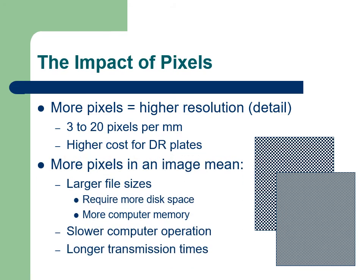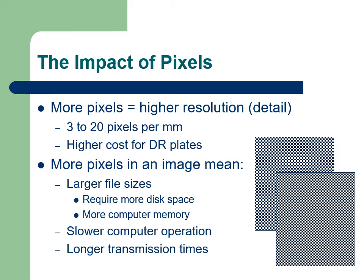The ultimate impact of more pixels means more data for the computer to process, leading to the need for larger storage devices and more computer memory requirements. More data also impacts the speed at which data can be displayed and results in longer transmission times when moving data from one location to another. Most of these speed and capacity problems become less severe each year as computers become more powerful and hard disks larger.